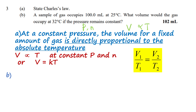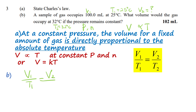For part b: a sample of gas occupies V₁ = 100 mL at temperature T₁ = 25°C. What volume will the gas occupy at T₂ = 32°C? We need to find V₂ using V₁/T₁ = V₂/T₂.